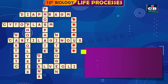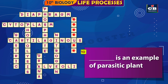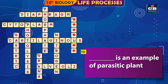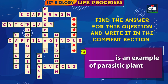10 Down: Dash is an example of a parasitic plant. Find the answer for this question and complete the crossword puzzle yourself.